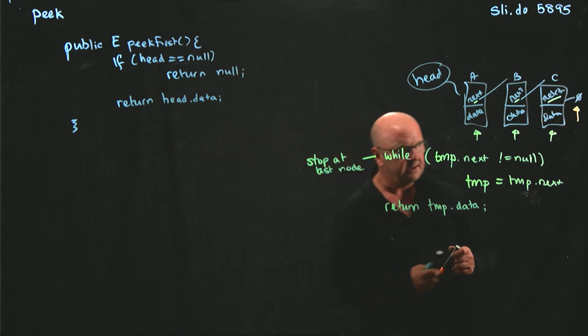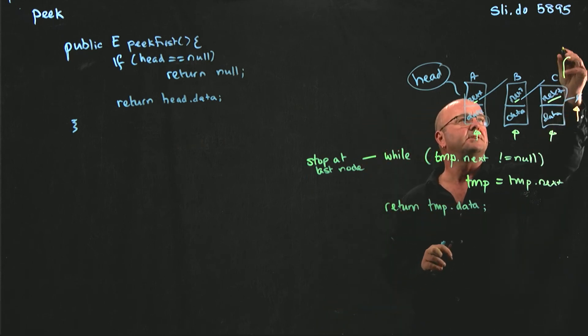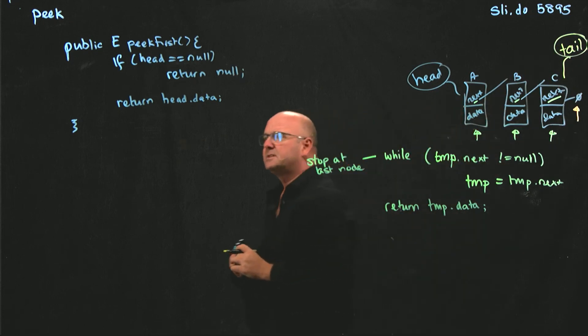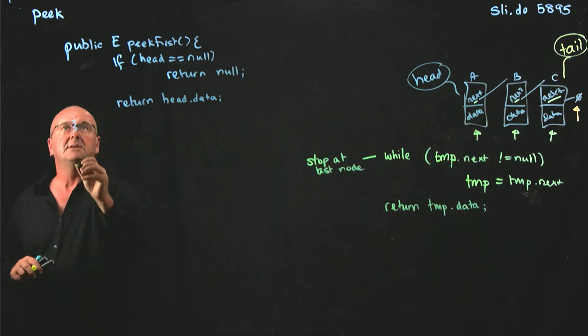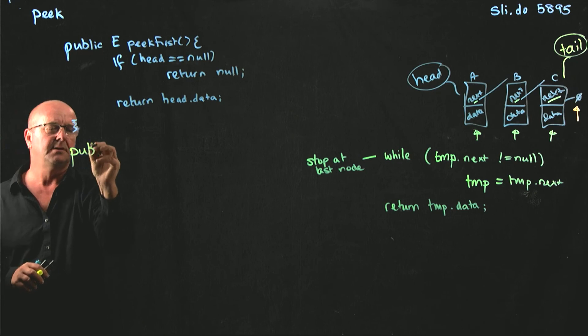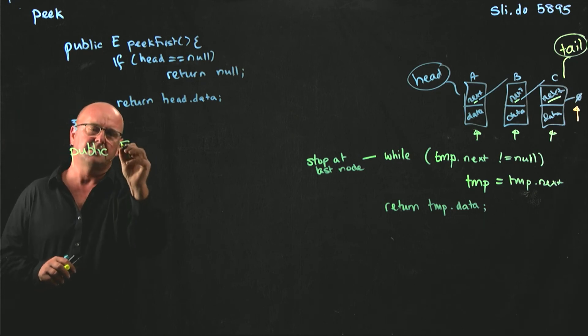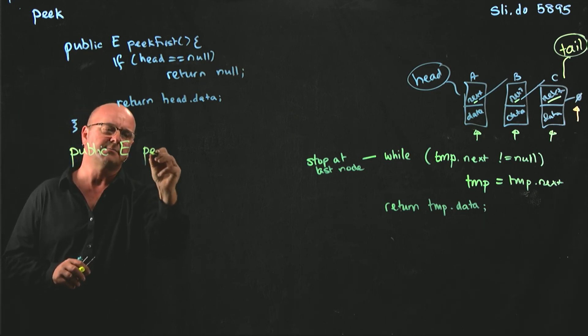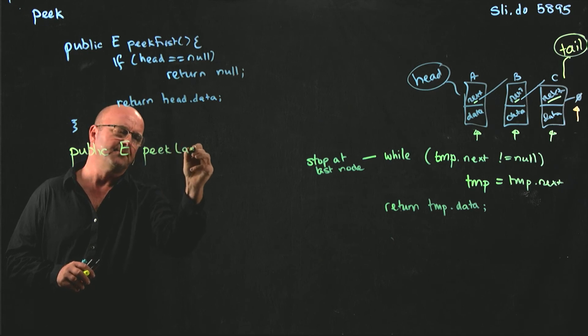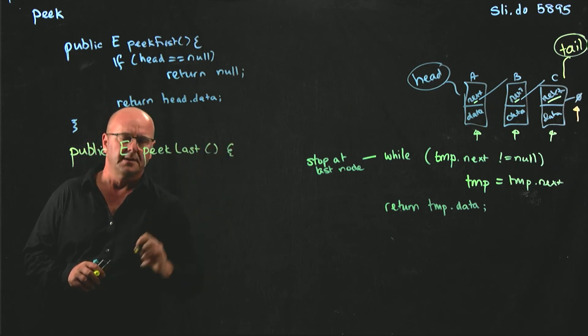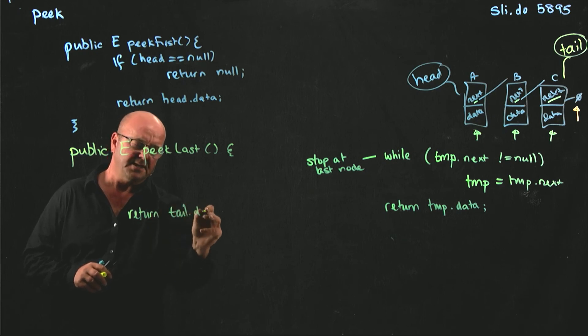You guys, remember, you guys have a tail pointer. And our tail pointer provides us some benefits. So, for example, to get the last thing using peak last, we can just return tail.data.